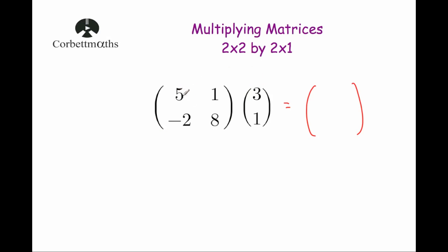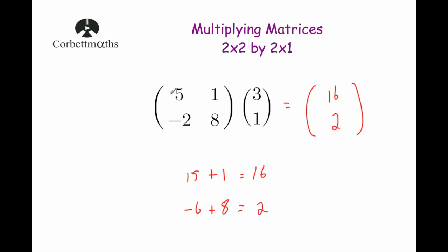So we're going to do 5 times 3, and 5 times 3 is 15, and then 1 times 1 is 1, and we add those two together to get 16. So 16 will be our first number in the matrix. And then to get the number beneath it, we're going to do the second row — the negative 2, 8 — by the 3 and the 1. So negative 2 times 3 is negative 6, and then 8 times 1 is 8, so we add on 8. And minus 6 plus 8 is 2. So our next number is 2.